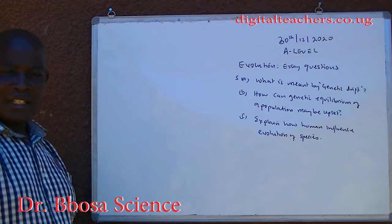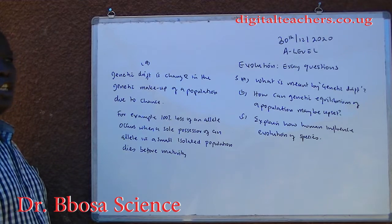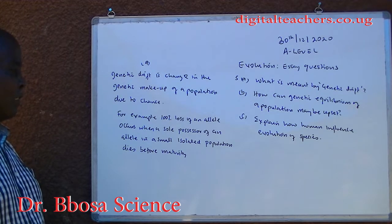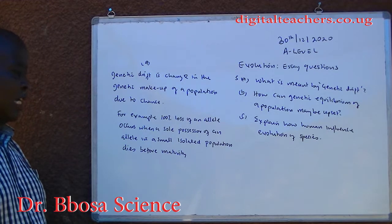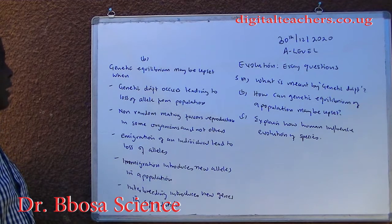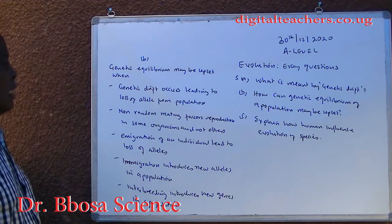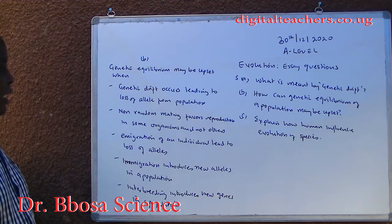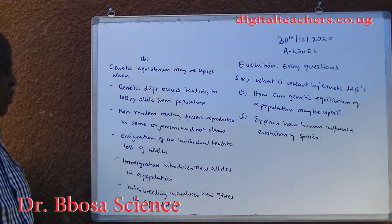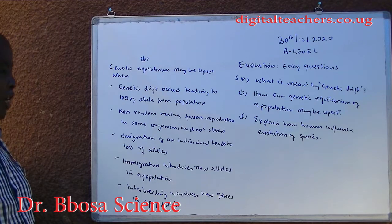You can pause and answer. A. Genetic drift is a change in the genetic makeup of a population due to chance. B. Genetic equilibrium may be upset when: genetic drift occurs, leading to loss of alleles from a population; non-random mating favors reproduction in some organisms and not others; emigration of individuals leads to loss of alleles.